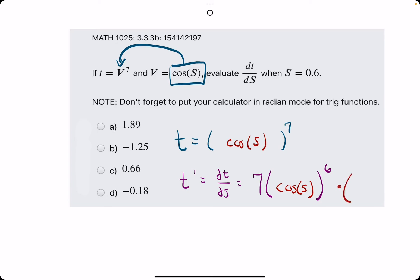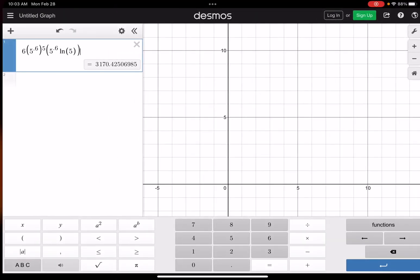Then, we multiply by the derivative of the inside. The inside is cosine of s, which has a derivative of negative sine of s. This is our derivative, so we plug in 0.6 here.